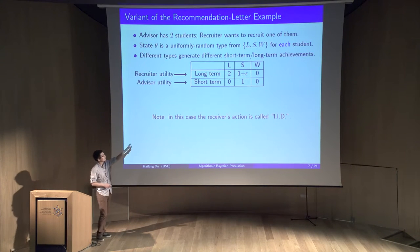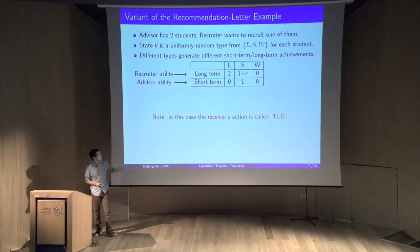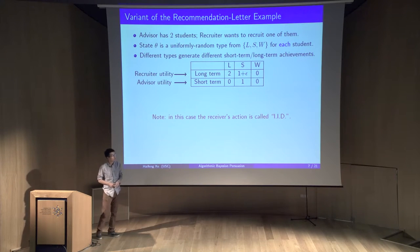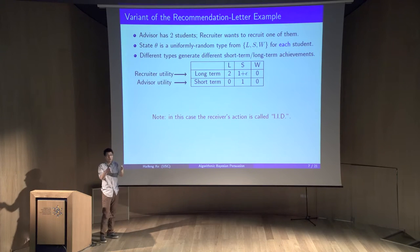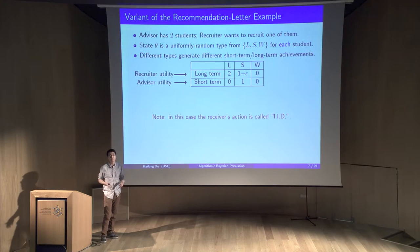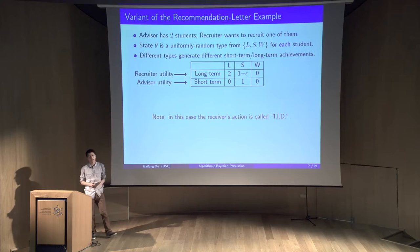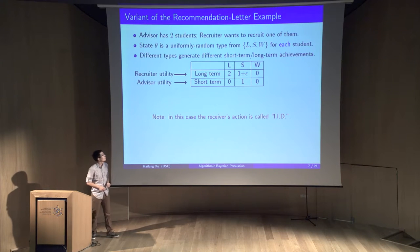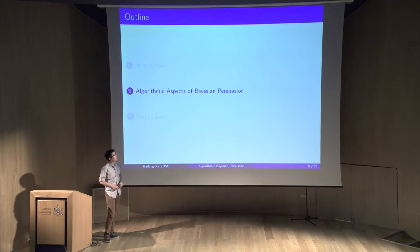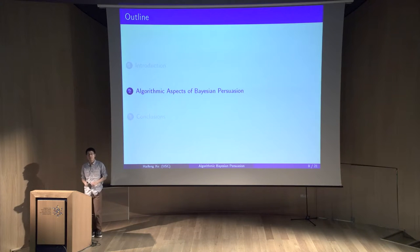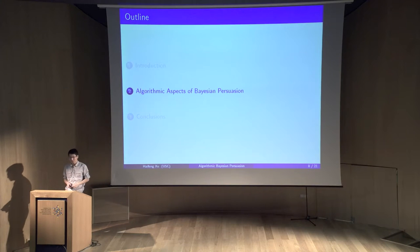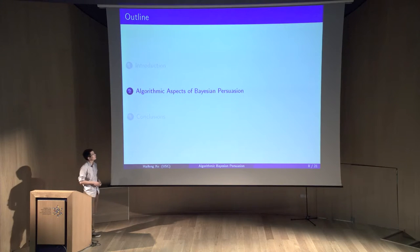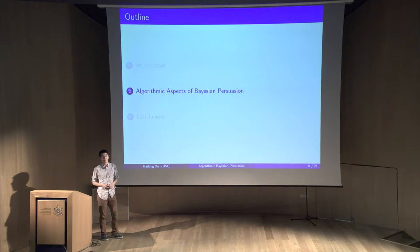Notice that in this case the receiver's actions are IID — these two students look the same to the recruiter a priori; they are independently and identically drawn from the same type set. That's the economics part of this talk. Now I'll discuss the computational aspects of this model — specifically, algorithms that compute the optimal signaling scheme.